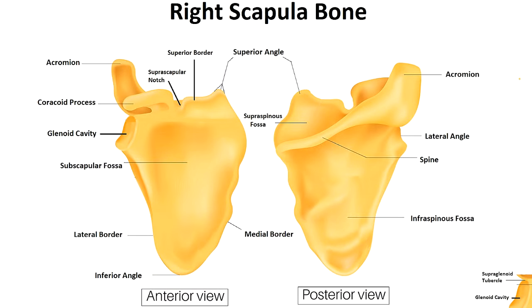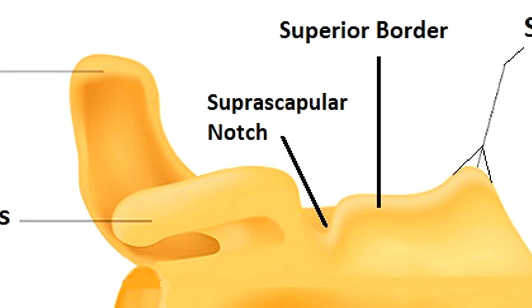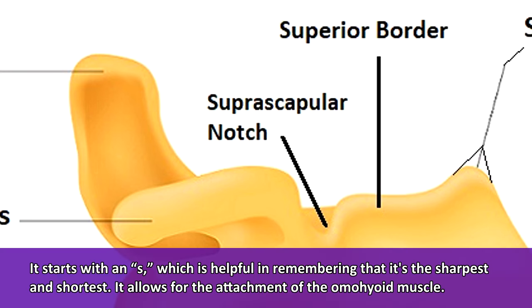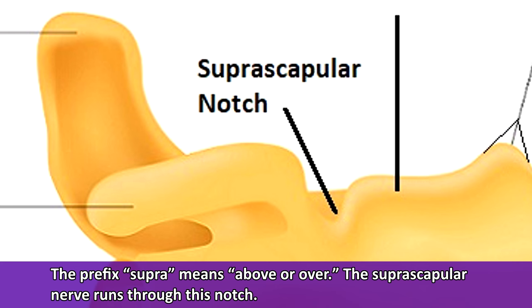Now let's cover the three borders on the scapula bone — these are easy to remember if you know your directional terms. First, we have the superior border. 'Superior' starts with an S, which helps remember its two main characteristics: it's the sharpest and the shortest. It's located at the top of the scapula and allows for the attachment of the omohyoid muscle. On the superior border, you'll also notice the suprascapular notch, which allows the suprascapular nerve to run through it.